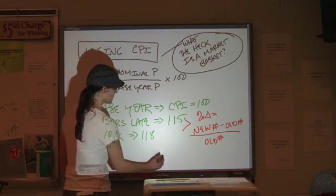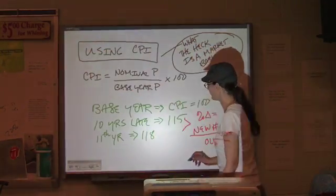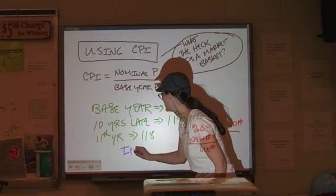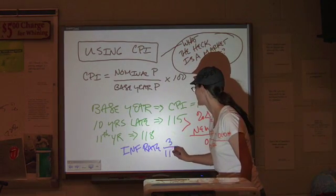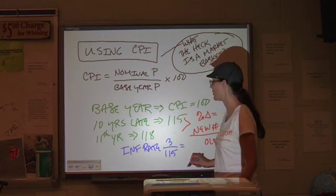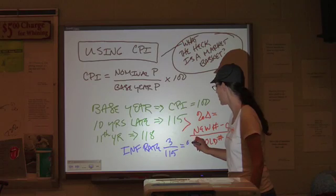We're going to have 118 minus 115 over 115. So, to figure out the inflation rate, 3 over 115 and you're going to get a very small percentage.